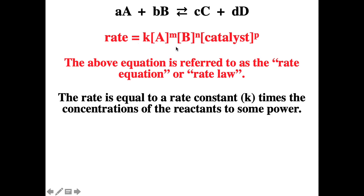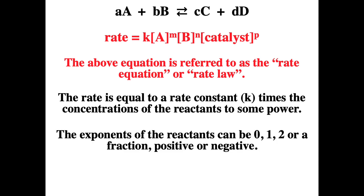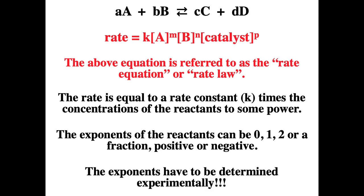The rate equals the rate constant, lowercase k, times the concentration of the reactants to some power. Please do not confuse the rate constant (lowercase k) with the equilibrium constant (capital K). The exponents of the reactants can be zero, one, two, a fraction, positive, or negative. One of the most important things to remember is that the exponents have to be determined experimentally.